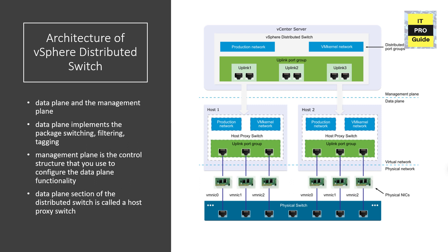The answer lies in understanding the architecture. A vSphere Distributed Switch consists of two logical sections: the data plane and the management plane. The data plane implements packet switching, filtering, tagging, and so on. The management plane is the control structure used to configure data plane functionality. In a vSphere Distributed Switch, the data plane and management plane are separate — the data plane sits in the ESXi host, and the management plane sits at the vCenter level, helping you administer network configuration from the data center level.